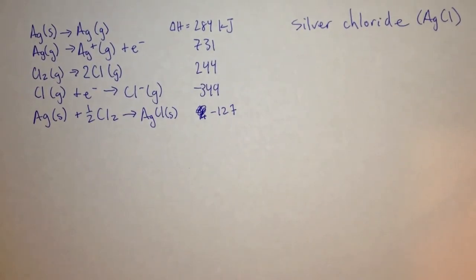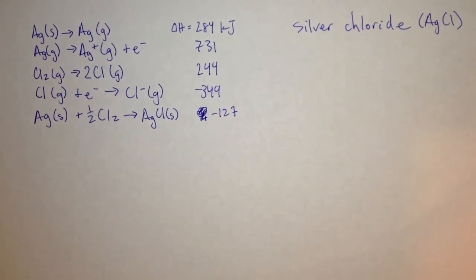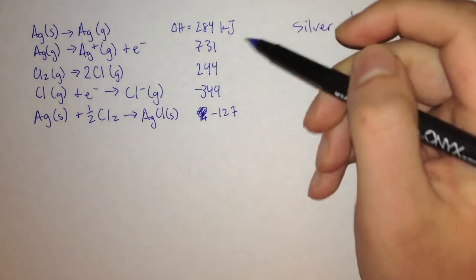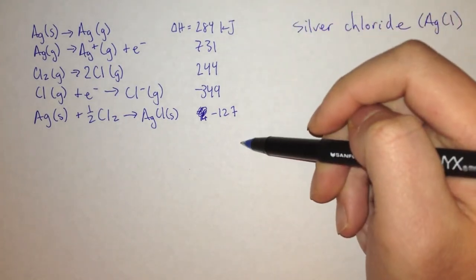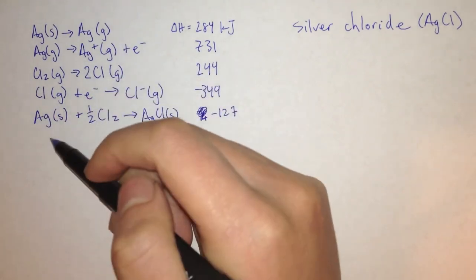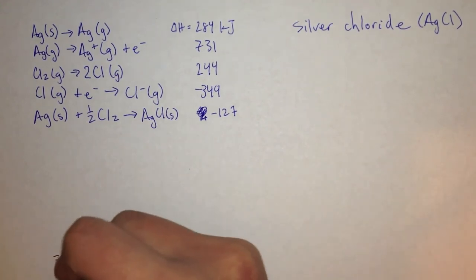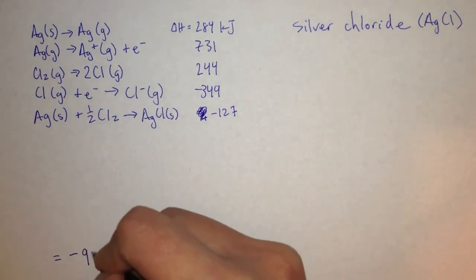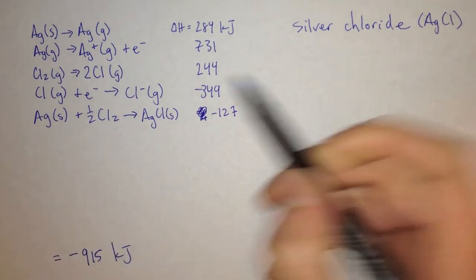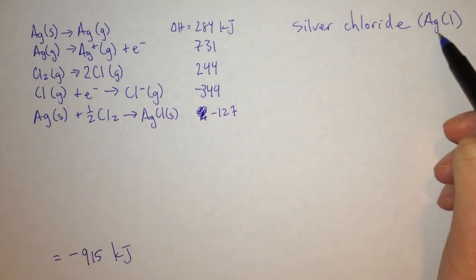Now let's look at one last problem — the lattice energy of silver chloride. On the left we have the given values for the heats of some reactions. If you press pause now, you can solve it yourself, then hit play again to check your answer. The correct answer is negative 915 kJ for the lattice energy of silver chloride.